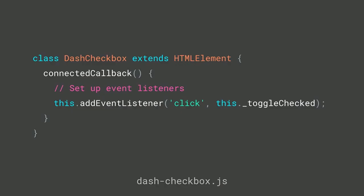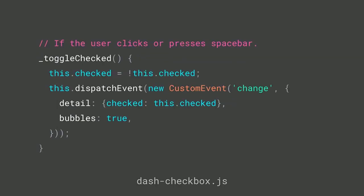Custom elements give us lifecycle callbacks. Inside connectedCallback, which fires any time the element gets inserted in the page, I can add event listeners for user clicks, key-down, and similar events. I have a toggleChecked handler that flips my checked state, triggering the setter which sets the attribute, and then dispatches an event telling the outside world something changed. The event name 'change' was chosen specifically because that's what the native input checkbox also fires — mapping closely to that interface has upsides when working with Angular.